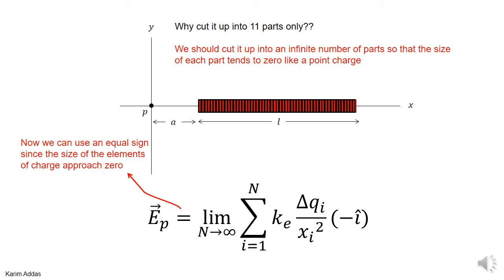How would you make this exact? You can make this exact, in which case you can use an equal sign, by making the number of elements go to infinity, which is the same thing as making the size of each element approach zero. In that case, you are justified in using the equation for a point charge kq over x². And then this will give you an exact value of the electric field at point P.